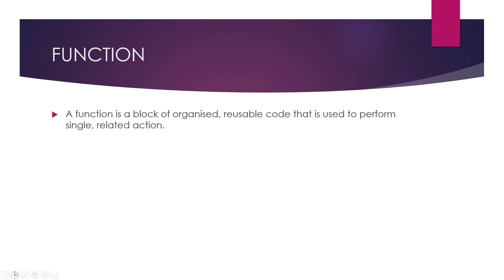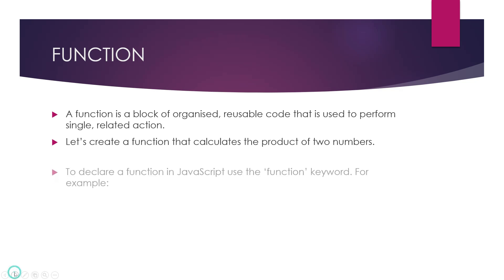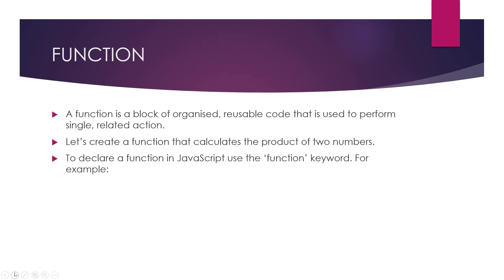A function is a block of organized, reusable code that is used to perform a single and related action. We are going to create an example here — a function that can calculate the product of two numbers. When you declare a function in JavaScript, you use the function keyword. For example: function product(a, b) and the return will be a multiplied by b, giving the total product.